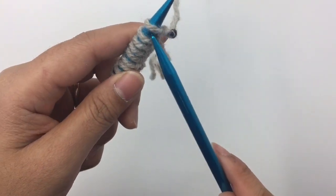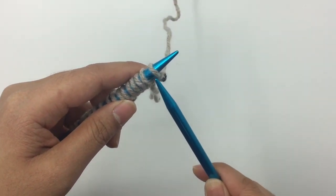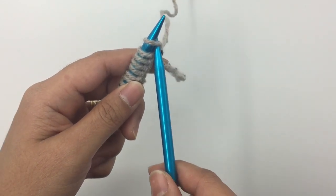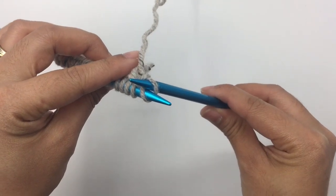we're going to insert the right needle, the right hand needle, into the front loop only. See? Insert. That's what this looks like.